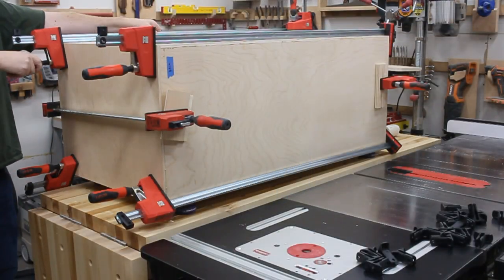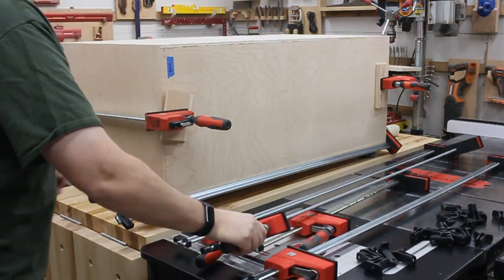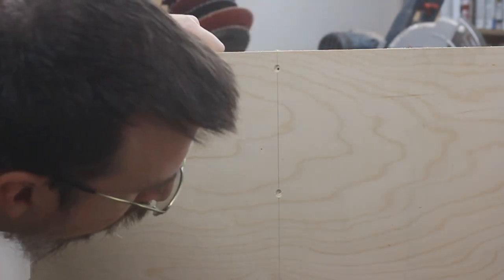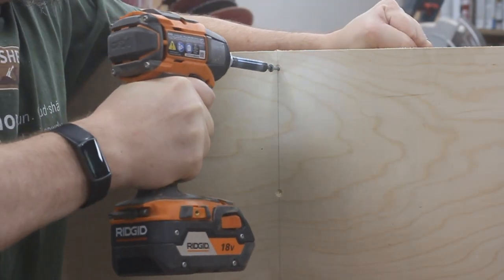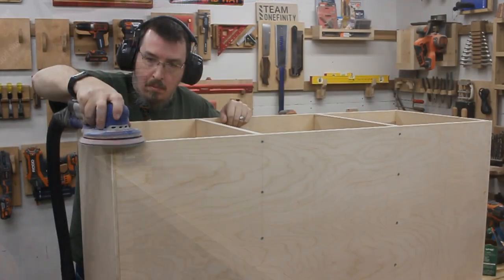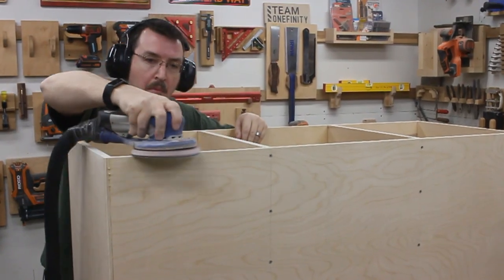And when it did, I could remove all the clamps and then add some reinforcement screws through the top and the bottom of the cabinet. And then I had Princess Leia do some sanding for me.